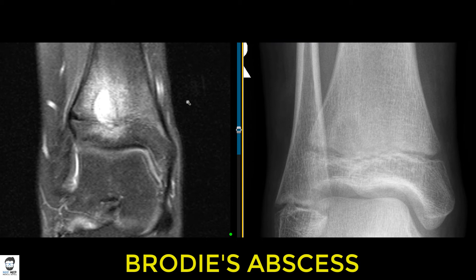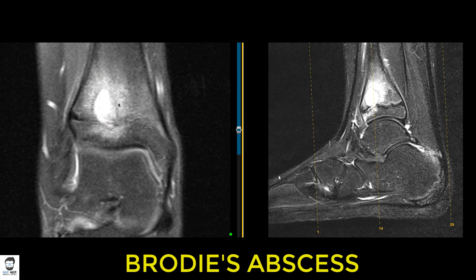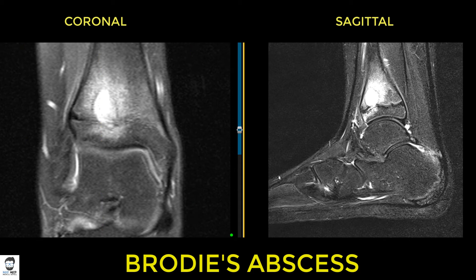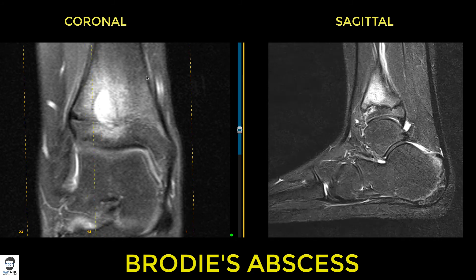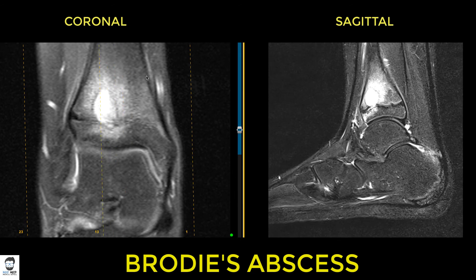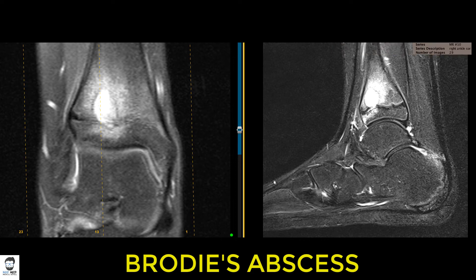Looking at both coronal and sagittal images simultaneously, you can see the lesion in the distal tibia on both views. Scrolling through both, the two images change corresponding to each other. You can see a reference line in the center of the lesion on the coronal with the corresponding sagittal view alongside. Always look at all views — now we'll examine the T1 images.